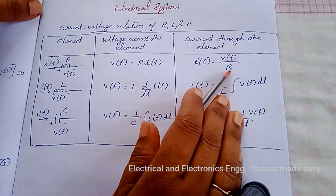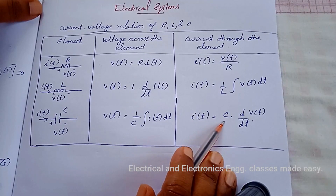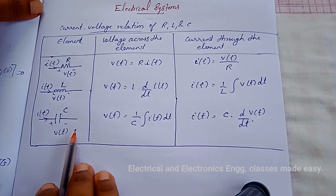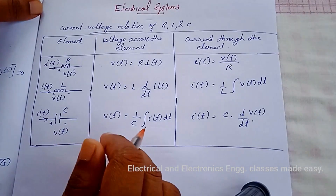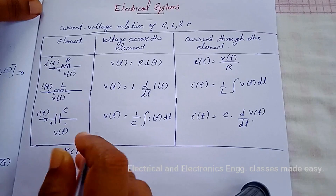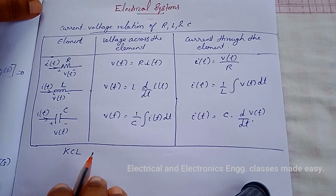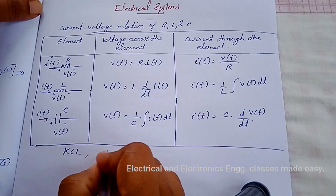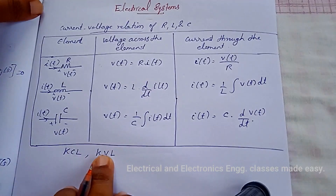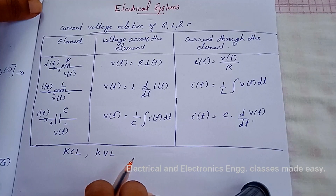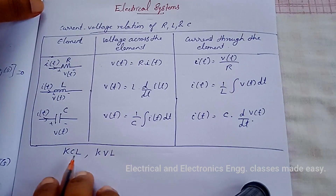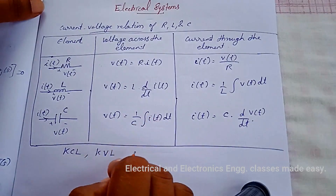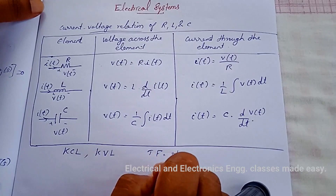Where R, L, and C are resistance, inductance, and capacitance respectively. The differential equations governing electrical systems can be formed by writing KCL equations by choosing various nodes in the network, or KVL equations by choosing various closed paths. The transfer function can be obtained by taking the Laplace transform of the differential equations and rearranging them as the ratio of output to input.